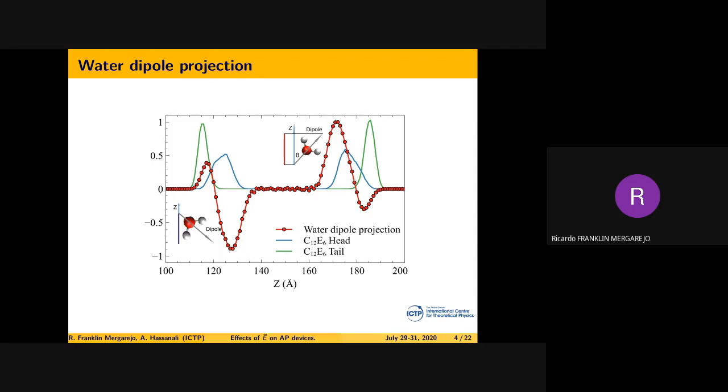We compute the dipole orientation of water molecules at the surface. For that, we establish a Gibbs dividing interface, which is at half the density of water, because it permeates all through the surfactant, even in the hydrophilic part.